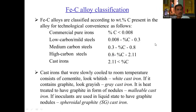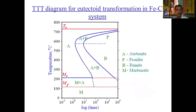Fe-C alloy classification is based on the percentage of carbon: commercially pure iron contains up to 0.008% carbon; low carbon or mild steel up to 0.3% carbon; medium carbon steel from 0.3 to 0.8% carbon; high carbon steel from 0.8 to 2.1% carbon; and cast irons contain greater than 2.1% carbon. Cast irons slowly cooled to room temperature consist of cementite and appear whitish — white cast iron. If they contain graphite they appear grayish — gray cast iron. Heat treated to have graphite in nodule form gives malleable cast iron, and if inoculants are used in the liquid state to produce graphite nodules, spheroidal graphite cast iron is formed.